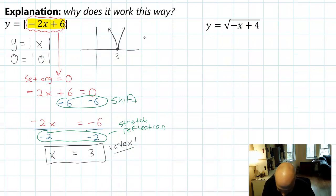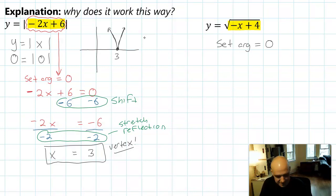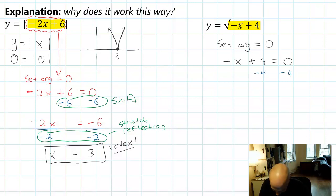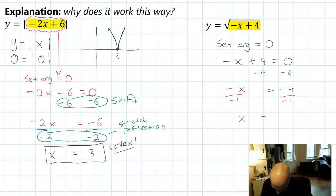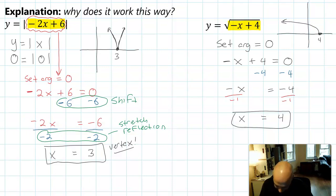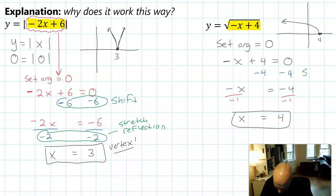Let's apply the same procedure to the square root of negative x plus 4. I can set the argument equal to 0 — the argument is the thing under the root. So: negative x plus 4 equals 0. Take away 4 from both sides — that's doing the shift — to get negative x equals negative 4. Now divide by negative 1, and we get x equals 4. Which is, if you remember from that graph, the location of that vertex point at 4 where it opened to the side. So by setting the argument equal to 0 you can tell where the starting point of your graph is going to be.